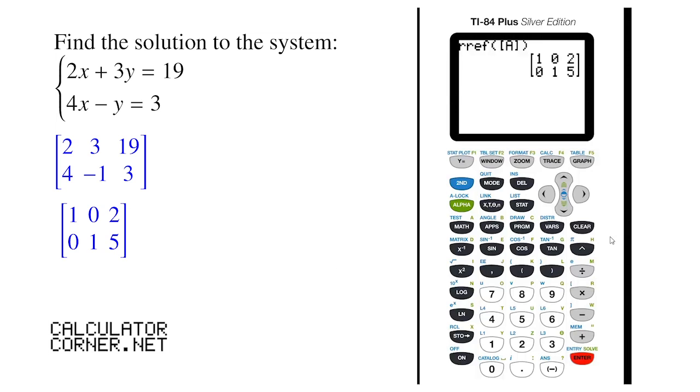The way you read off the answers for this matrix is that the first row, where the one is on the left, represents the X, and that is X equals 2. And the second row, where the one is in the second column, represents Y, and Y is equal to 5. So the complete answer is the point 2 comma 5.